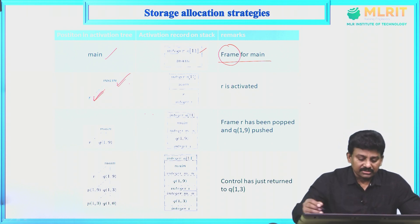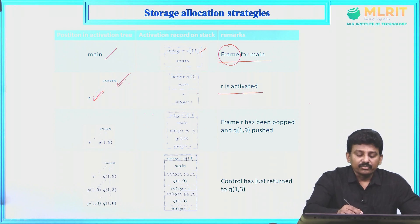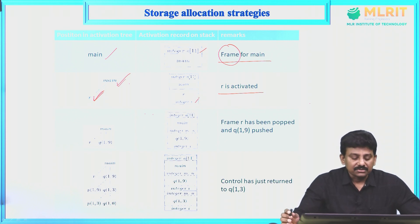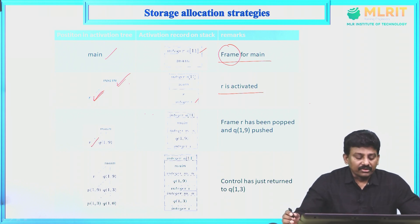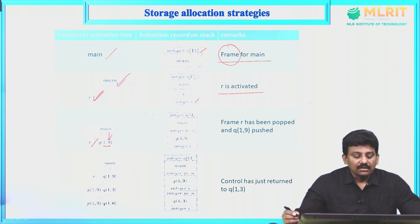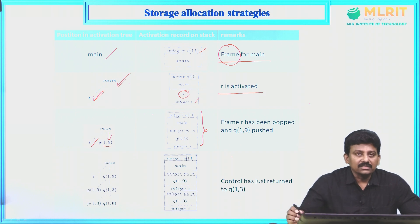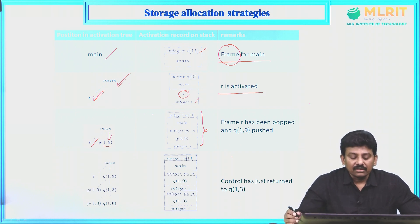Whenever the read array function is completed, we pop its activation record from the stack. Then we call quicksort with parameters 1 and 9, so the activation record for Q(1,9) is pushed onto the stack. Read array (R) is no longer in the diagram because R has ended, so its activation record was popped. Frame R has been popped and Q(1,9) is pushed onto the stack.